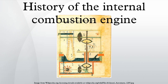1780s - Alessandro Volta built a toy electric pistol in which an electric spark exploded a mixture of air and hydrogen, firing a cork from the end of the gun. 1791 - John Barber receives British patent number 1833 for a method for raising inflammable air for the purposes of producing motion and facilitating metallurgical operations. In it he describes a turbine.